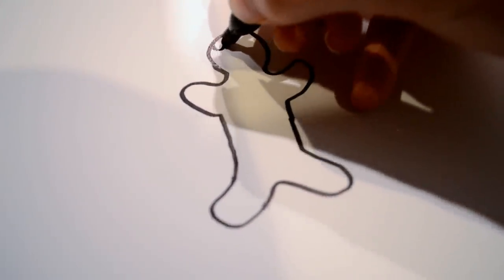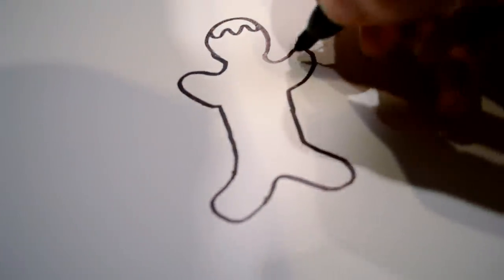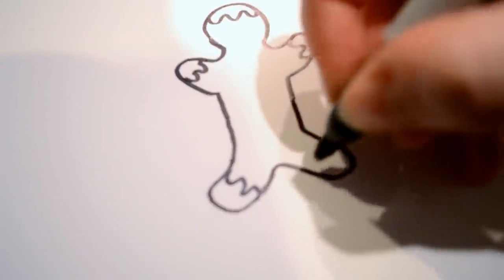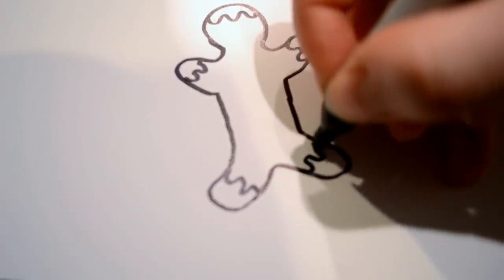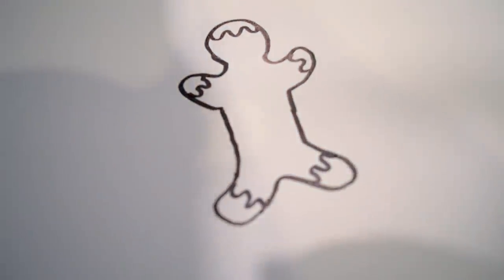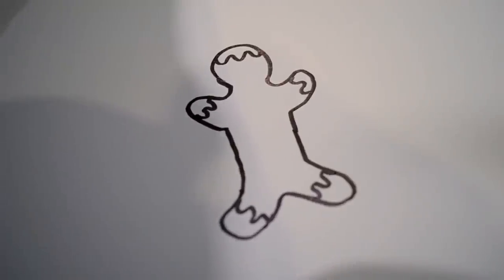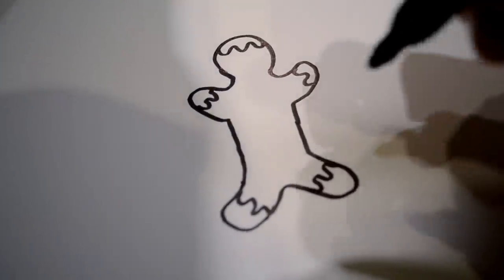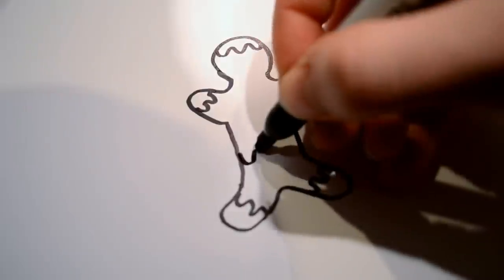And then from there I like to add some squiggly lines. First one on top of the head and then on each of the limbs. There you have that. And then also just one across the belt.